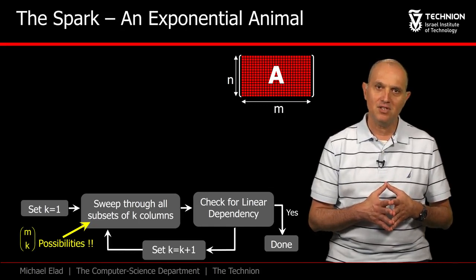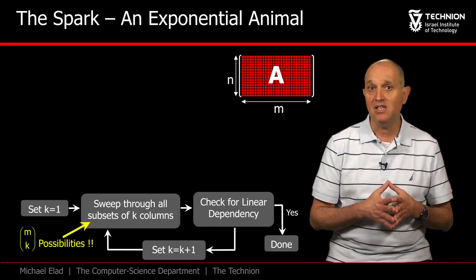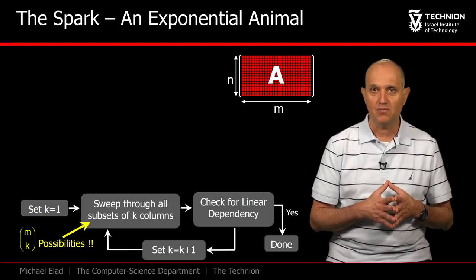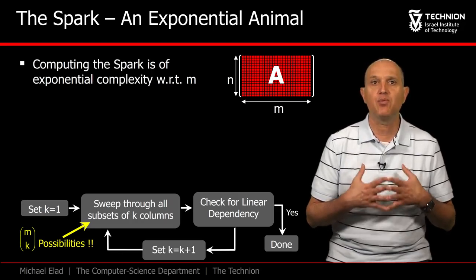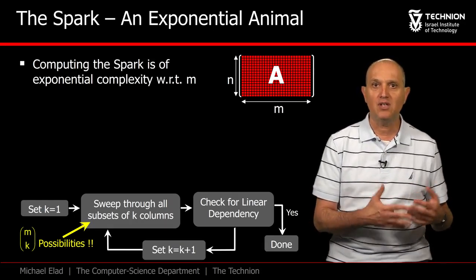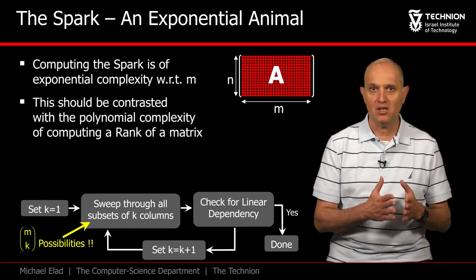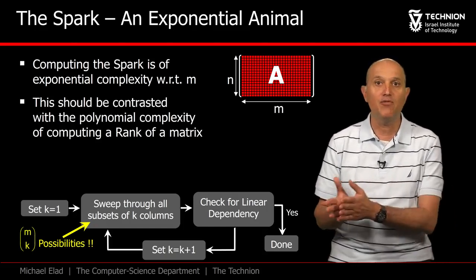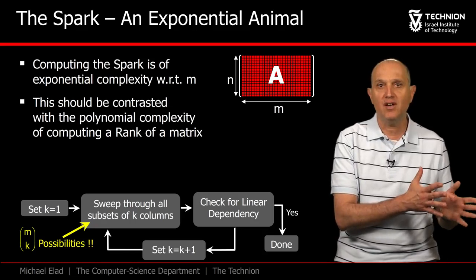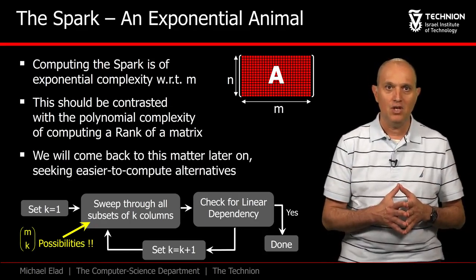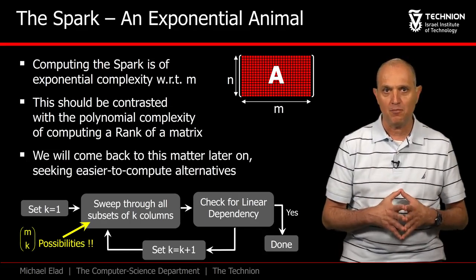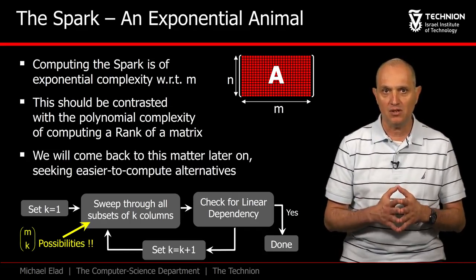Well, this algorithm is simple to understand and even easy to program. However, it is in fact impossible to use. The complexity of this process is exponential in m, due to the number of choices we have to sweep through in the quest for the dependent set. Contrast this with Gram-Schmidt or LU factorization that compute the rank with a far more civilized polynomial complexity.